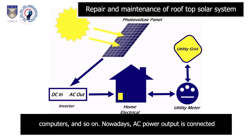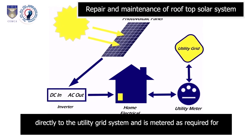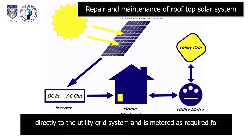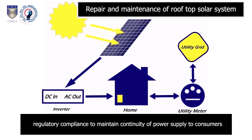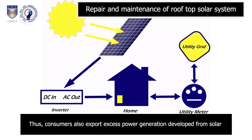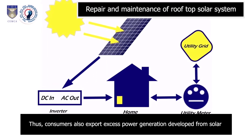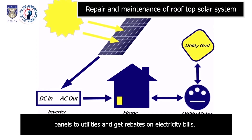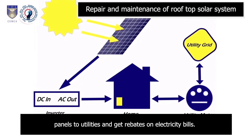Nowadays, AC power output is connected directly to the utility grid system and is metered as required for regulatory compliance to maintain continuity of power supply to consumers. Consumers can also export excess power generated from solar panels to utilities and get rebates on electricity bills.